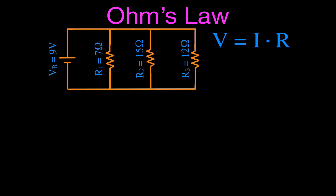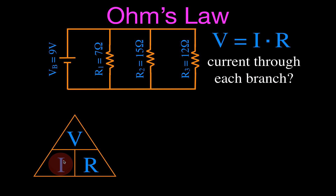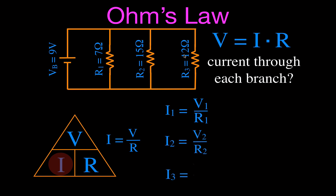Now we're going to do a couple of simple problems using Ohm's Law. We have a simple circuit with a 9-volt battery and three resistors in parallel with each other and with the battery. R1 is 7 ohms, R2 is 15 ohms, and R3 is 12 ohms. We want to figure out the current through each branch of that circuit. In a parallel circuit, the voltage across each resistor is the same and equal to the battery, but each has its own resistance, so we have I1, I2, and I3.